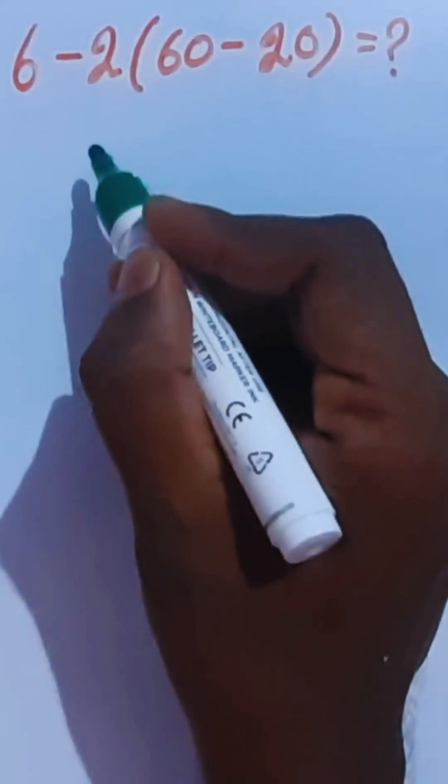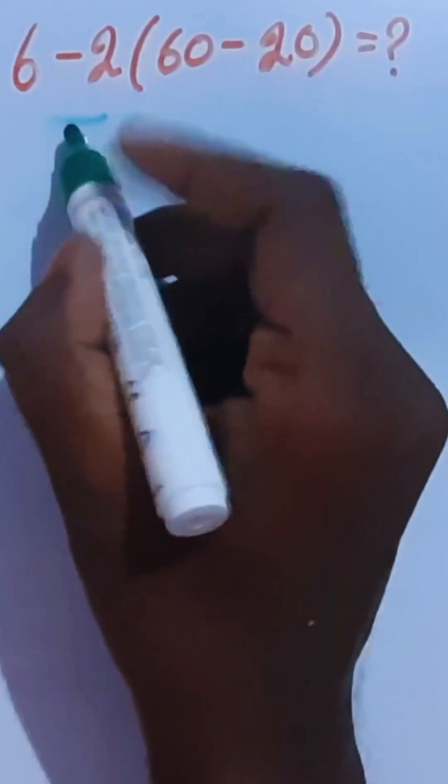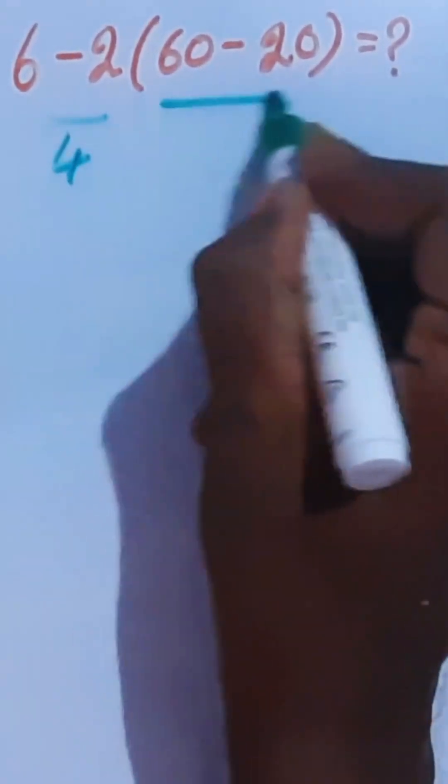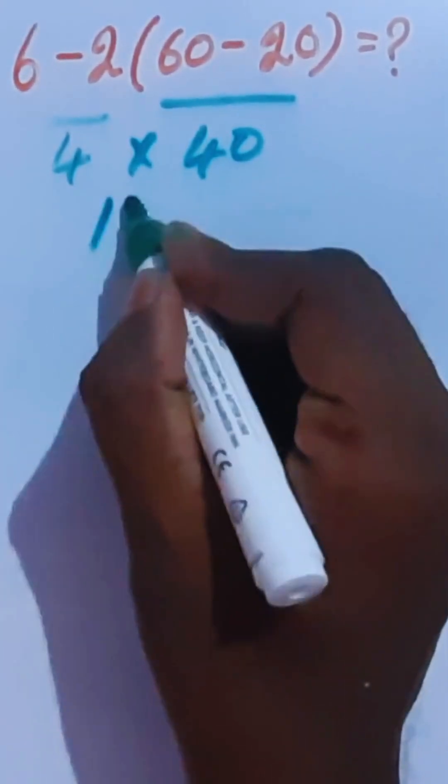Most of them get answer 160 for this problem. It is wrong. Here we have 4. This is 40. Now 4 times 40 is 160.